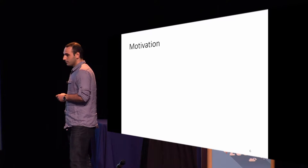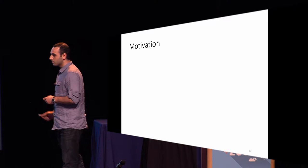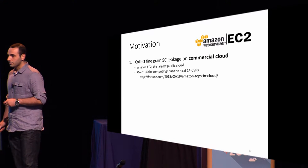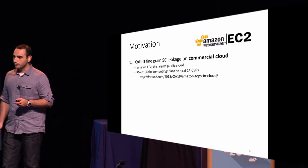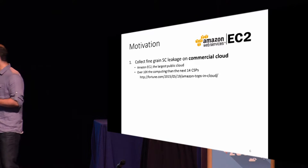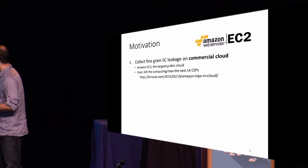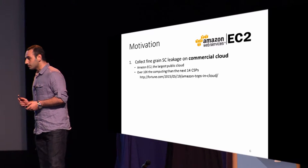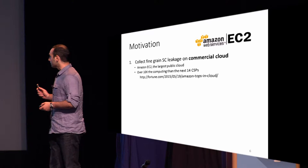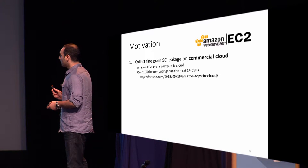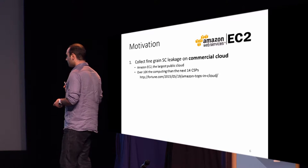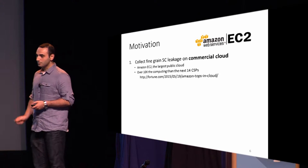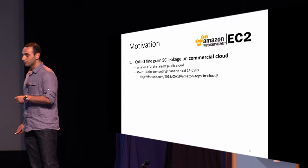In short, we have three motivations. First, we would like to collect fine-grained information on a commercial cloud. We chose Amazon EC2 since it's the largest public cloud — in fact, it is so large that it has 10 times more computing power than the next 14 cloud servers combined.